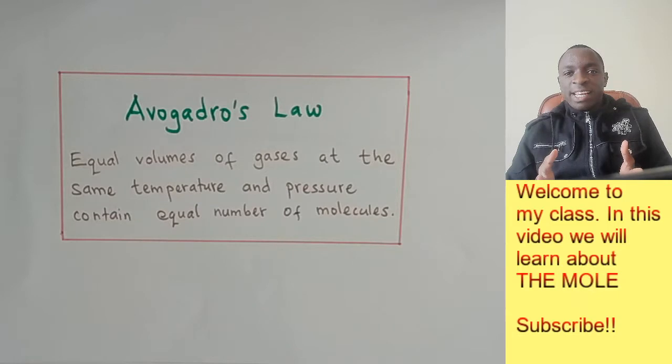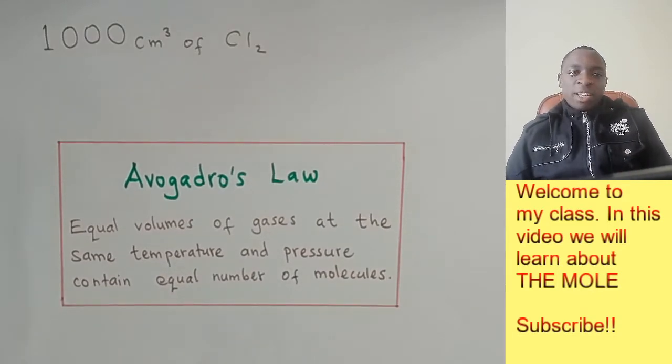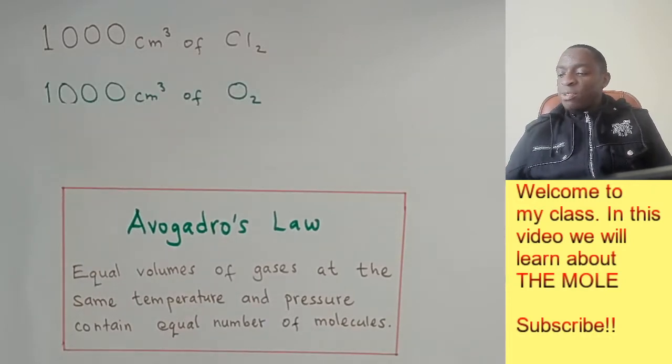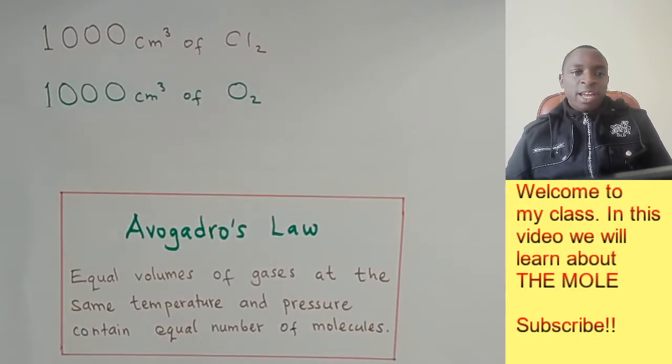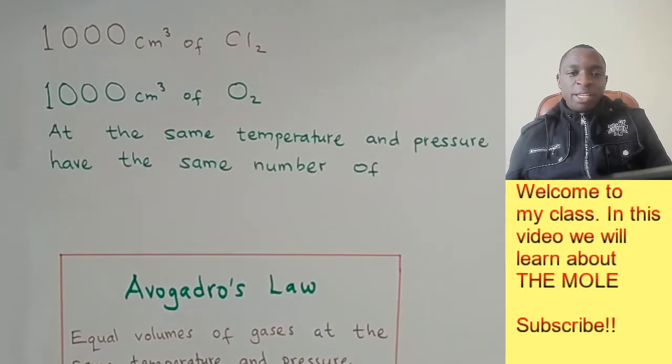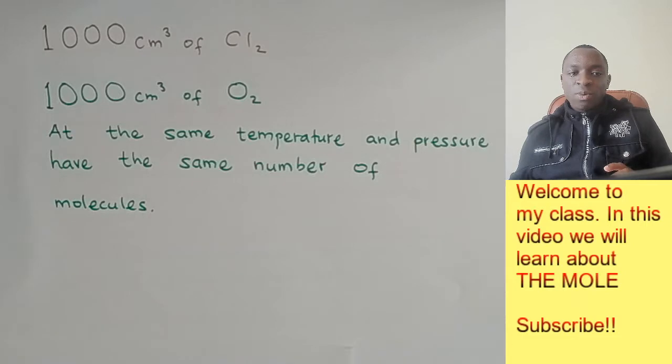Let us take an example. If you had a thousand cubic centimeters of chlorine and a thousand cubic centimeters of oxygen, these volumes measured at the same temperature and pressure, then it means that these two gases will have the same number of molecules.